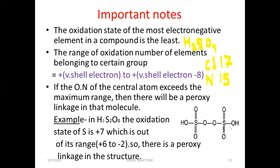The third rule: if the oxidation number of the central atom exceeds its maximum range, then there will be a peroxy linkage in that molecule. For example, in H2S2O8, with oxygen at minus 16 total and hydrogen at plus 2, sulfur comes to plus 7 — which is out of range since sulfur in group 16 has a maximum of plus 6. Therefore, there is a peroxy linkage in the structure. The neighboring structure of H2S2O7 shows oxygen atoms bonded to each other, which is the peroxy linkage.